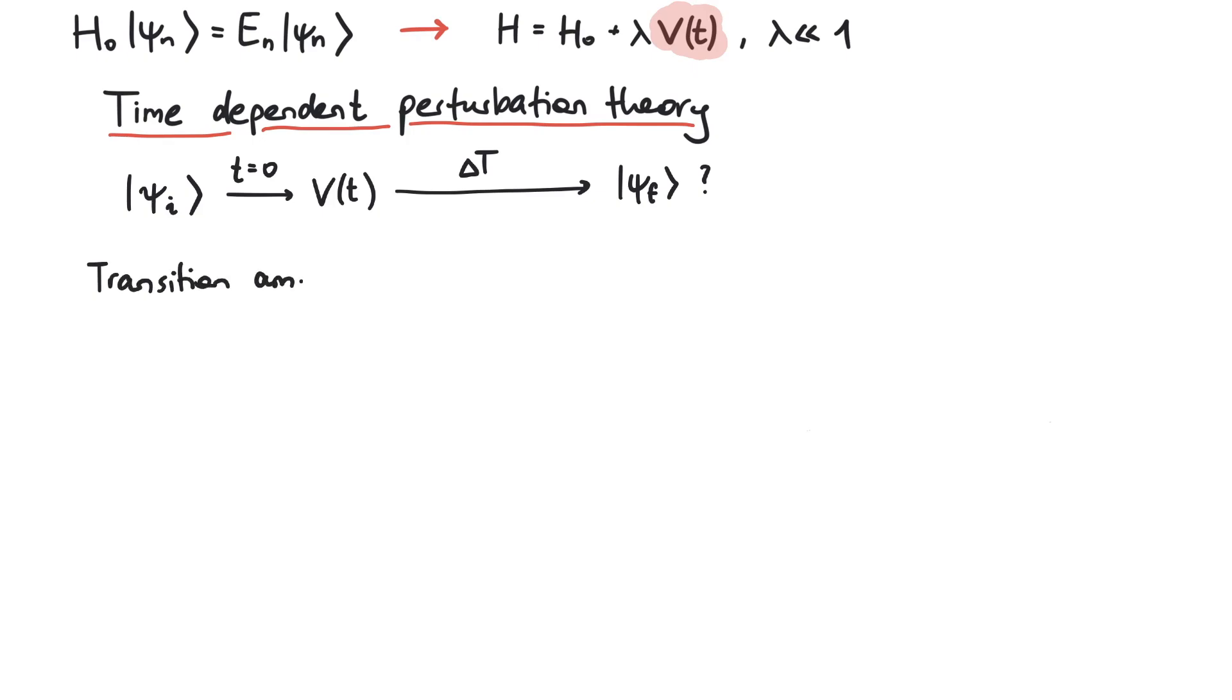To answer this, we first calculate the so-called transition amplitude aif that takes us from the initial to the final state. It's given by 1 over i h-bar, then the integral from zero to delta t, d tau. We integrate over the matrix element of the potential v of tau between the initial and the final state.